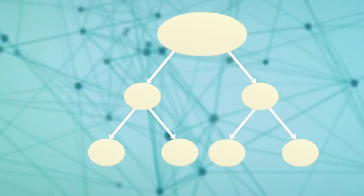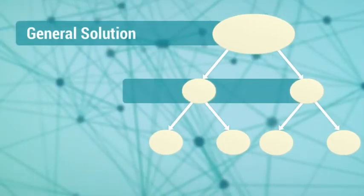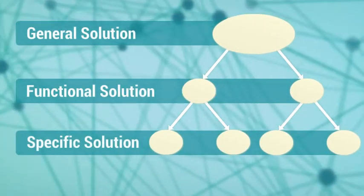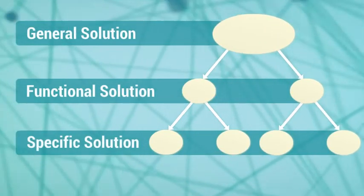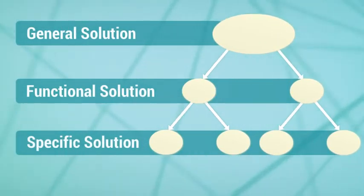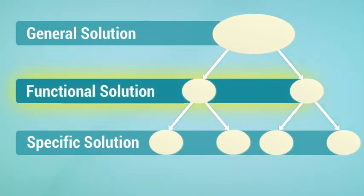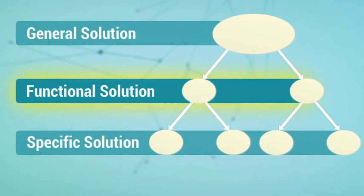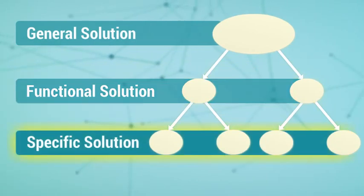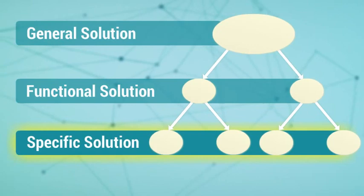Each pathway follows two steps: functional solutions and specific solutions. The functional solutions tell us what to do to reach the desired state or to modify the current situation. Specific solutions are methods to implement functional solutions.